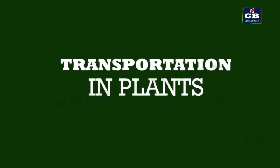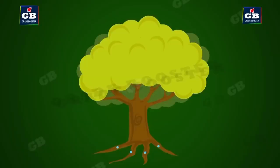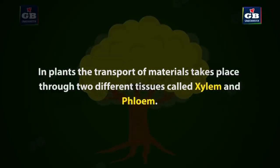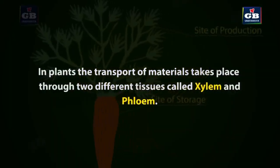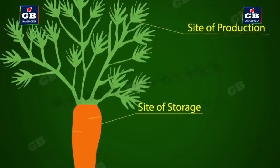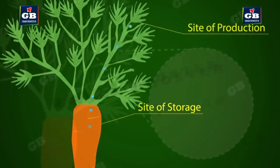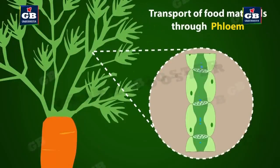Now we will study about the plant transport system. The requirement of energy in plants is less, which is why they have a slow transport system. In plants, the transport of food and water takes place by two different types of tissues — xylem and phloem. The food prepared in the leaves during photosynthesis must be supplied to different parts of the plant. This process is called translocation. The translocation of food materials like glucose takes place through phloem tissue in both upward and downward directions.